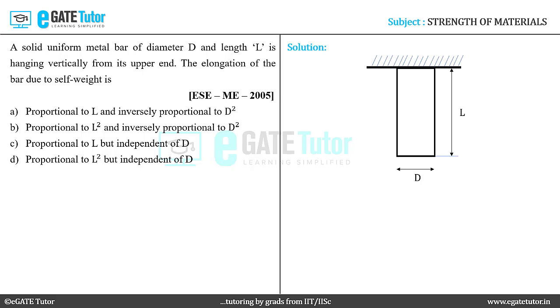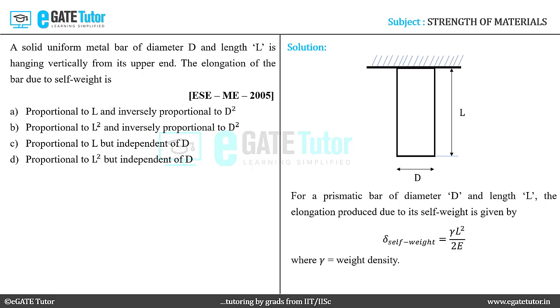the elongation due to its self-weight is given as delta self-weight equals gamma L squared by 2E. It is to be noted that gamma in this equation is weight density and L is the length of the bar and E is its modulus of elasticity.